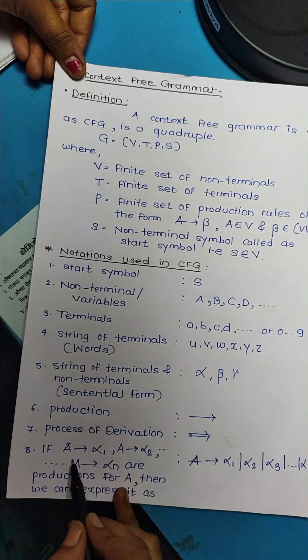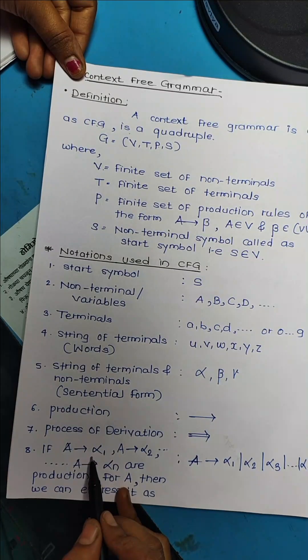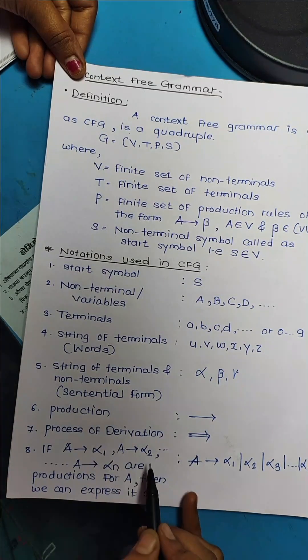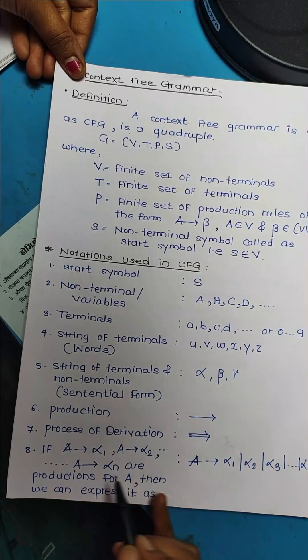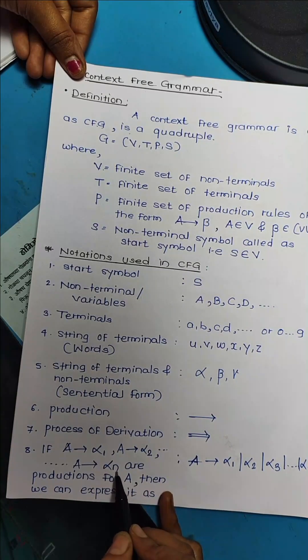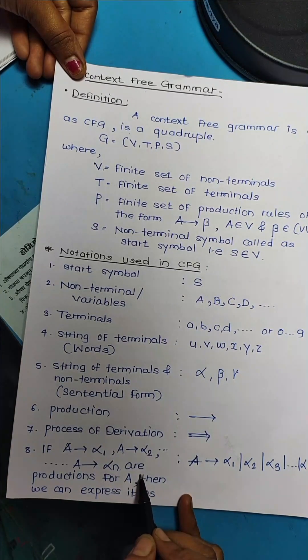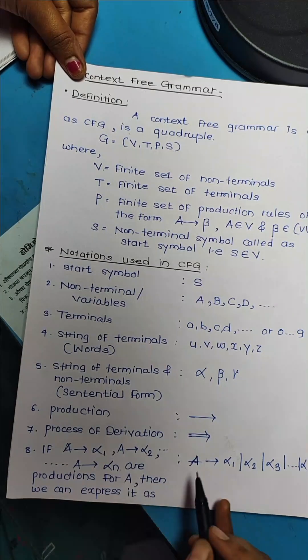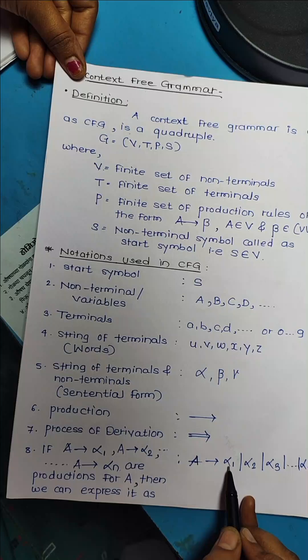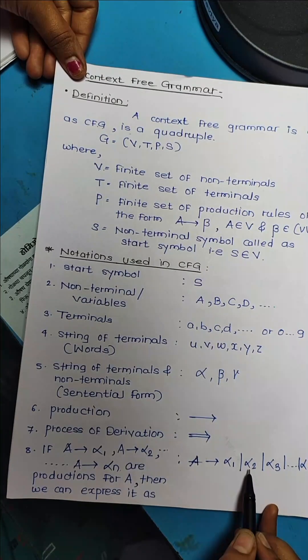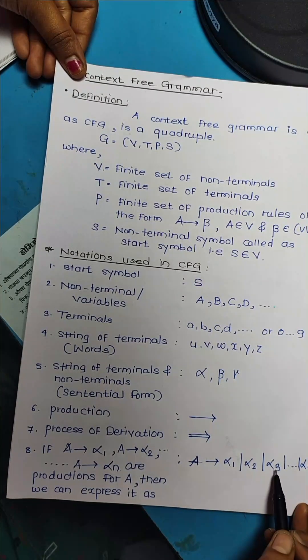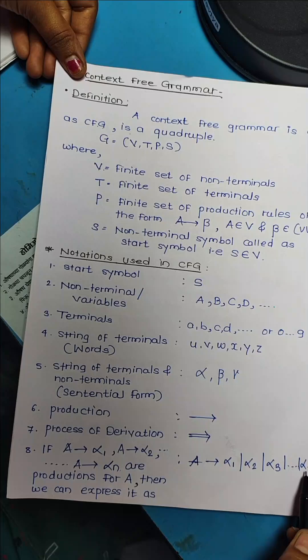Then if A gives alpha 1, A gives alpha 2, and so on, A gives alpha n are the productions of A, which are represented like A gives alpha 1 or alpha 2 or alpha 3 up to alpha n.